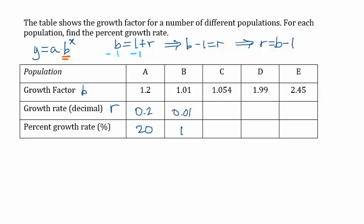or 1%. 1.054 minus 1 is 0.054, or 5.4%, and 1.99 minus 1 is 0.99, or 99%.